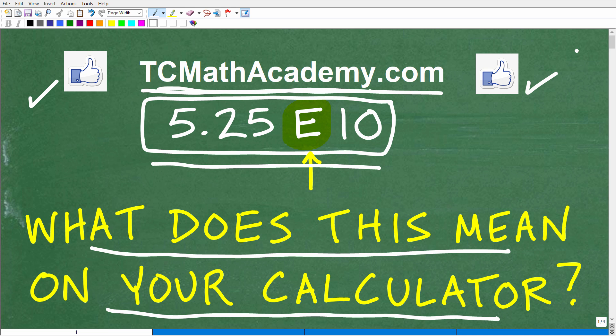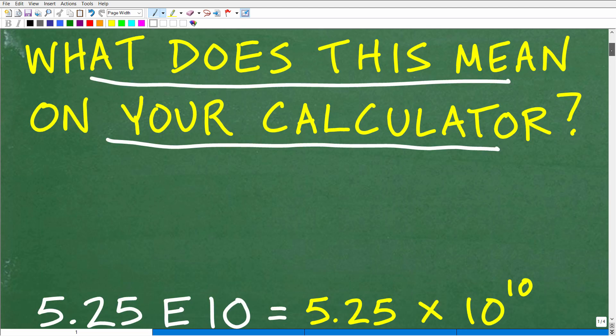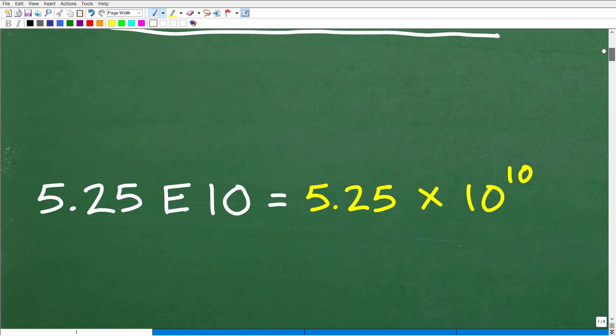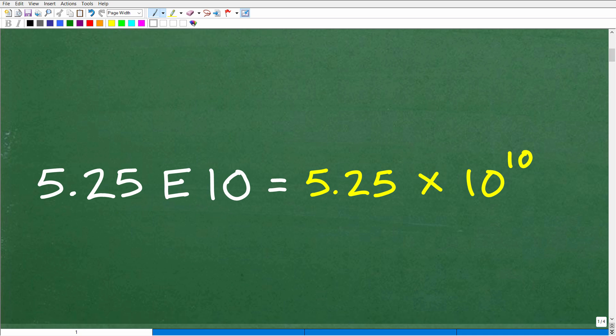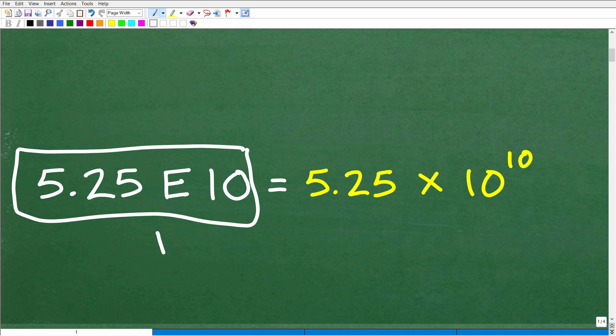Okay, so let's go ahead and take a look at this number here: 5.25E10. So this is a number, it is a value. And what does this mean? Well, let's go ahead and take a look at the answer right now. So 5.25E10—this would be something you would see on your calculator screen.